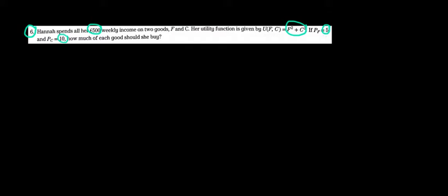Let's set up our Lagrangian and work through the math. It's pretty mechanical, but wise to get used to it. We maximize the utility function F squared plus C squared minus Lambda times our constraint. Let's write the constraint: the price of food is 5 times F plus the price of clothing is 10 times C equals the income of 500. So we have 5F plus 10C minus 500.